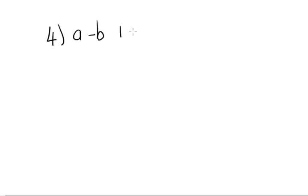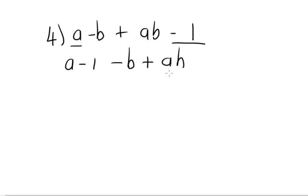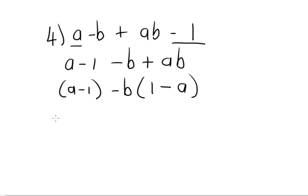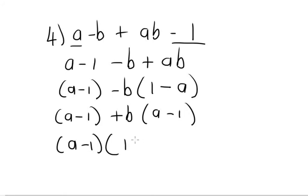Number 4: a minus b plus ab minus 1. Group a and ab, then minus b and minus 1. Leaving a minus 1 as one group, and taking out minus b from the other gives minus b times (1 minus a). Rewrite 1 minus a as minus(a minus 1), so we get (a minus 1) as the common factor, leaving 1 plus b. The answer is (a minus 1)(1 plus b).